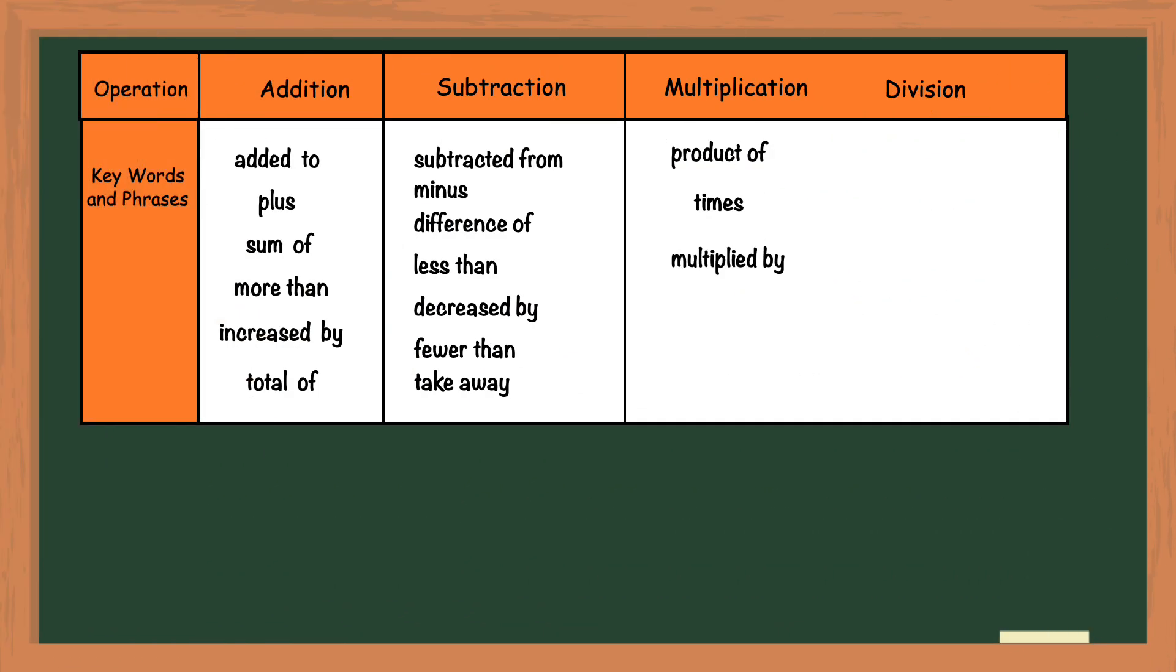Now let's switch to multiplication. I listed the three most common keywords and phrases in the table. Let's look at the phrases using the number 9 and the variable k. All three of these phrases are pretty straightforward. The algebraic expression is 9 times k.